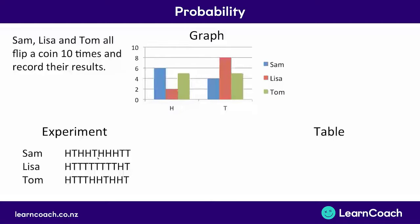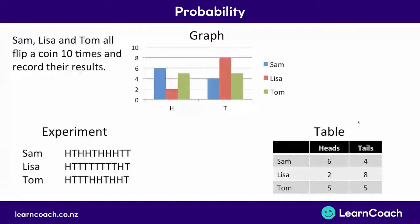Or you could see that Lisa only threw two heads. You can count the number that they all did. That would give you the same information as the graph. Or we could put that information in a table where Sam threw six heads and four tails, Tom threw five heads and five tails, and Lisa two heads and eight tails.